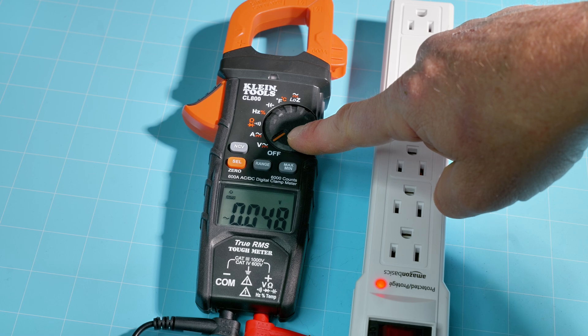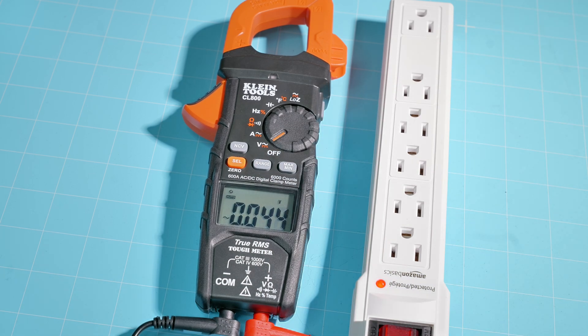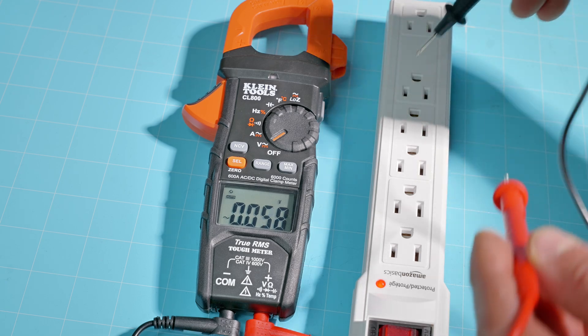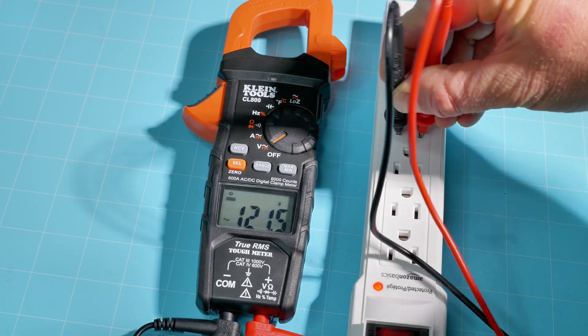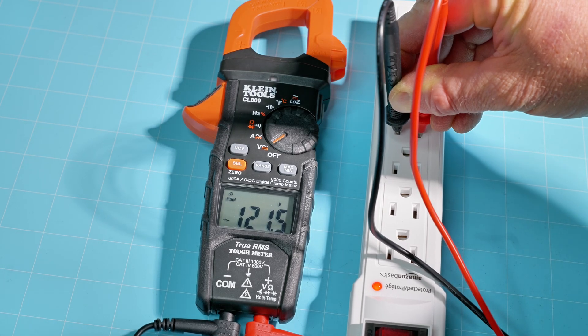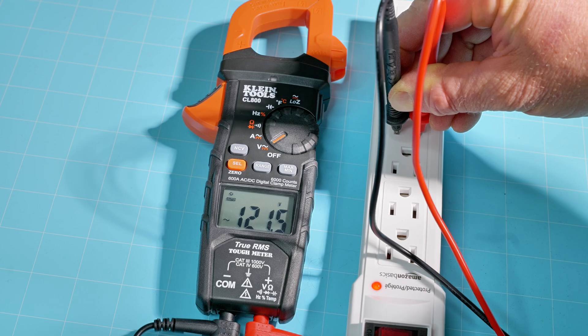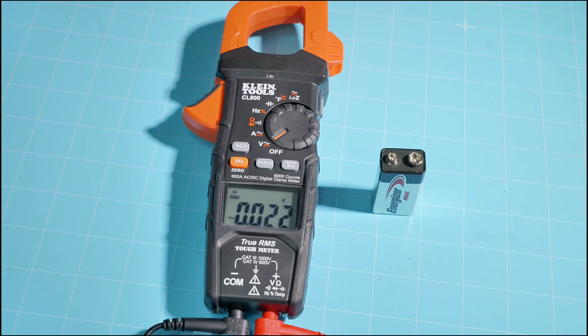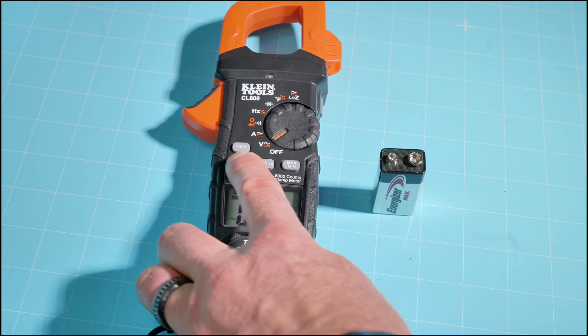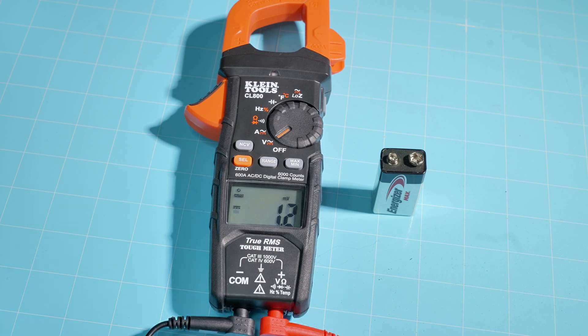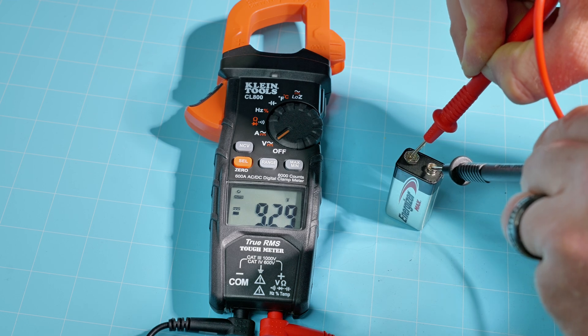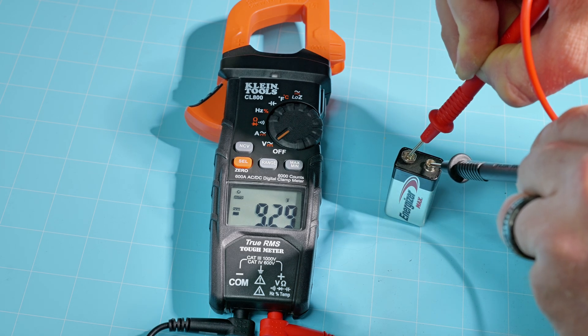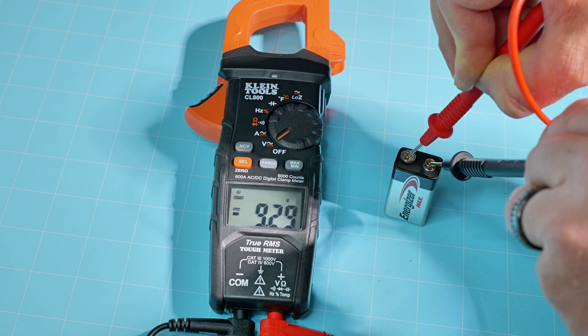First up is the AC and DC voltage feature. This is a pretty common feature that most people know how to use. Right now we're in voltage AC. As you can see, I have about 121.5 volts AC here on a US power strip. Next is a typical nine volt DC battery. Simply push the orange button, now we're in DC voltage. Place your leads across the terminals. As you can see, I have a fresh nine volt here at 9.29 volts DC.